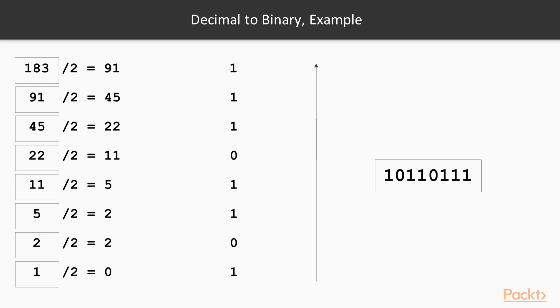We can call this algorithm "divide by 2" — and win a prize for naming creativity. To implement the algorithm in an iterative way, it is also quite straightforward.